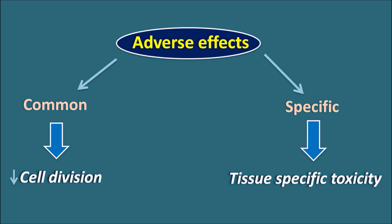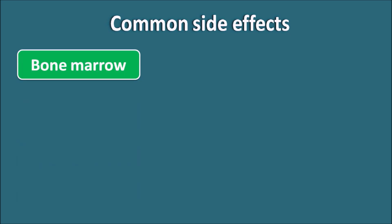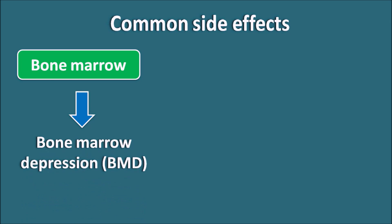The common side effects of anti-cancer agents are mainly due to inhibition of cell division. One very important region of continuous cell division is the bone marrow, where it continuously produces various types of monocytes. Anti-cancer agents can inhibit cell division at the bone marrow, producing bone marrow depression, also commonly known as myelosuppression. Many agents like alkylating agents, cytotoxic antibiotics, and anti-metabolites produce myelosuppression as a main side effect.